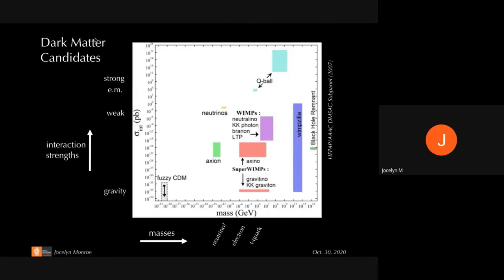There are many, many candidates for what dark matter might be. This plot shows on the x-axis the masses of dark matter candidates and on the y-axis their interaction probability. Different colored regions show different classes of theoretical models. The main takeaway is that there are models spanning over 40 orders of magnitude in mass and over 40 orders of magnitude in interaction strength. My research focuses on experiments looking for weakly interacting massive particle dark matter candidates — WIMPs — shown in the purple blob here. But it's worth keeping in mind that dark matter might lie in a totally different region of this theoretical parameter space.